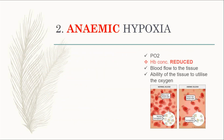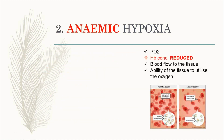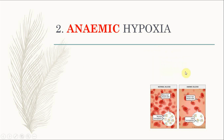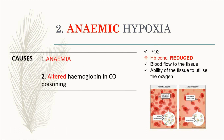Next is anemic hypoxia. This hypoxia happens when there is a reduction of the hemoglobin concentration in the body only, but the other things are normal. The causes are anemia, and the second cause is altered hemoglobin in carbon monoxide poisoning, which affects the hemoglobin concentration.